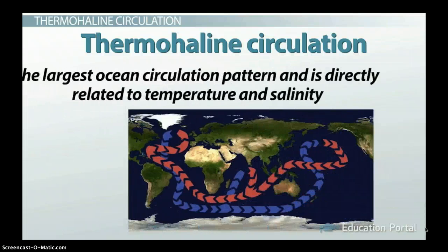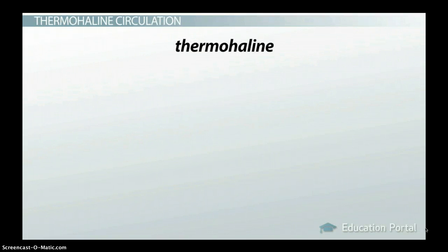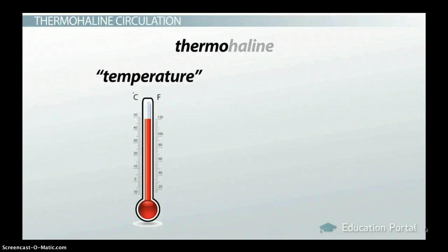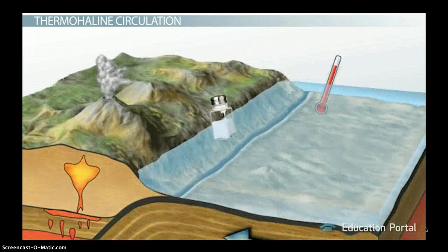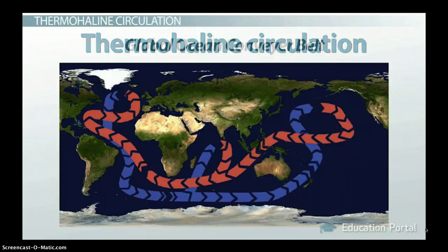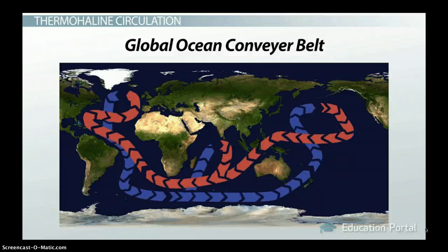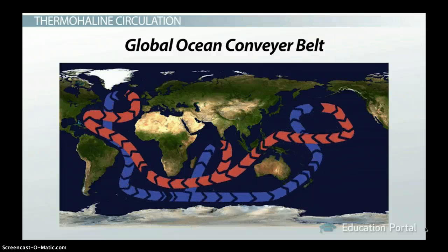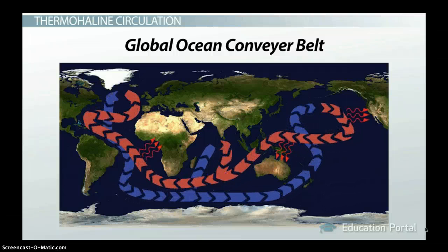Thermohaline circulation is the largest ocean circulation pattern and is directly related to temperature and salinity. If you break the word thermohaline down, you see that the prefix thermo refers to temperature or heat, and the suffix haline refers to salinity. The thermohaline circulation is sometimes referred to as the global ocean conveyor belt because it moves water on a path through the world's oceans as if it were on a giant conveyor belt that travels the entire globe.